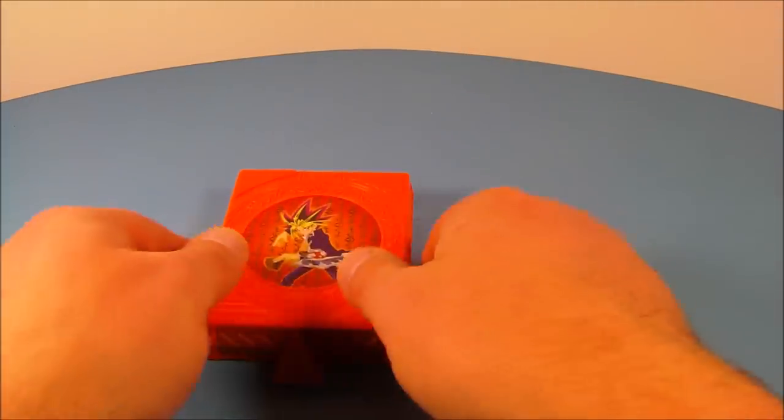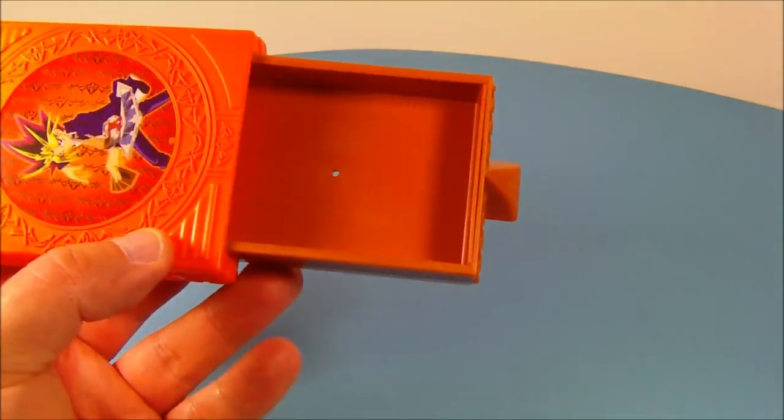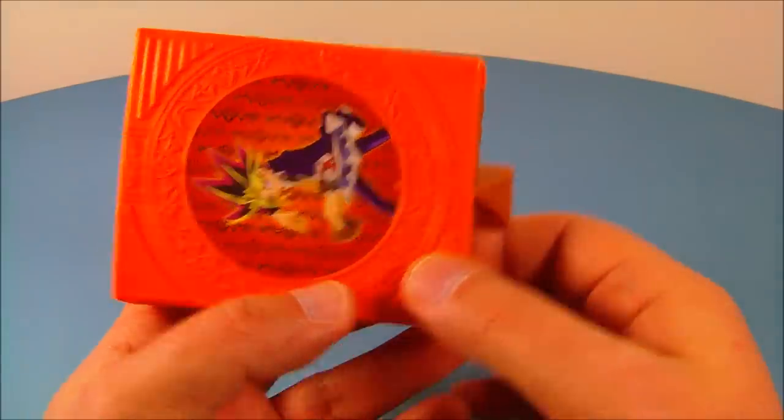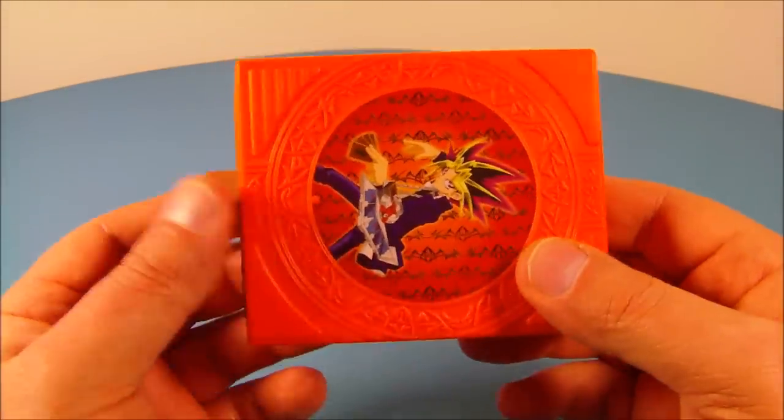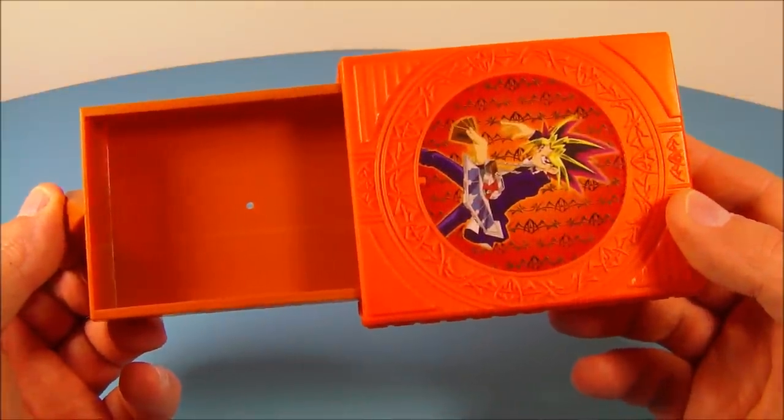So what you do is you take your Yami Yugi box here and you open this up just like so. You place your cards inside just like this here. Close it up. And then turn it around just like this here. Open it back up. And look at that. They're gone. Oh I love magic.